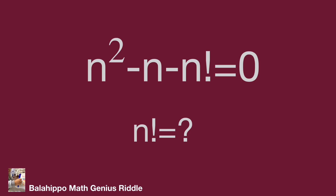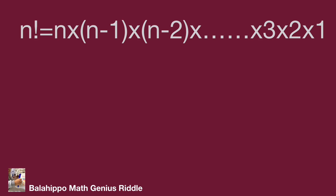n factorial equals n times (n minus 1), times (n minus 2), and so on, decreasing by 1 each time — such as after (n minus 2) comes (n minus 3) — continuing down to 3 times 2 times 1. That is the definition of factorial.